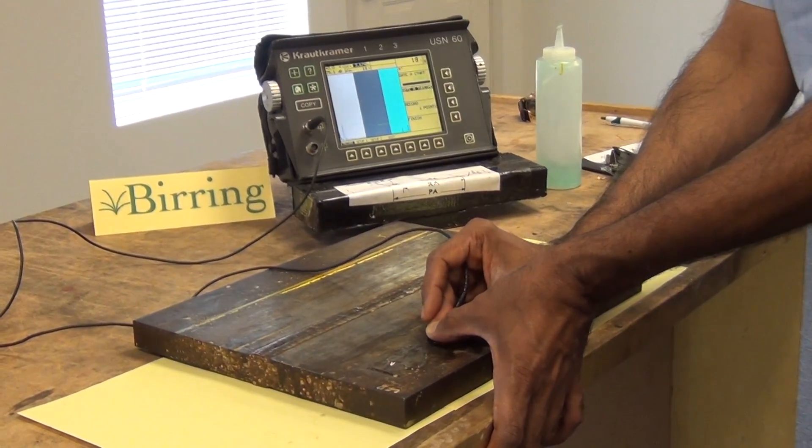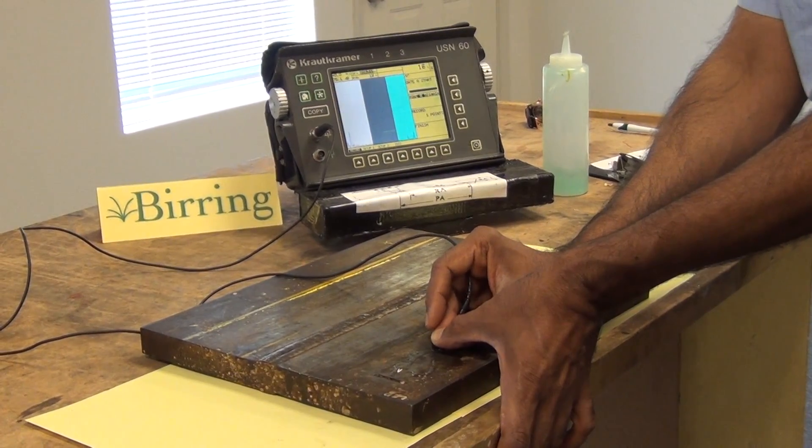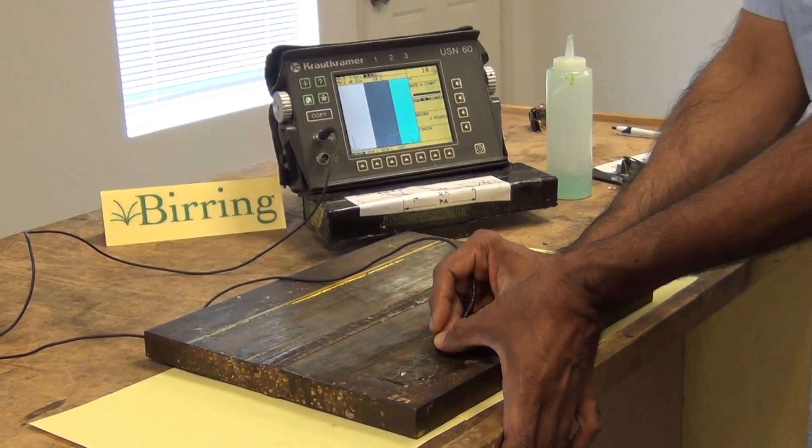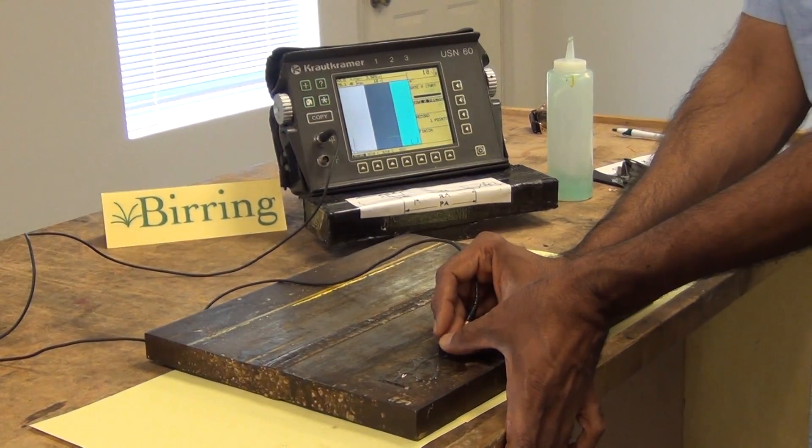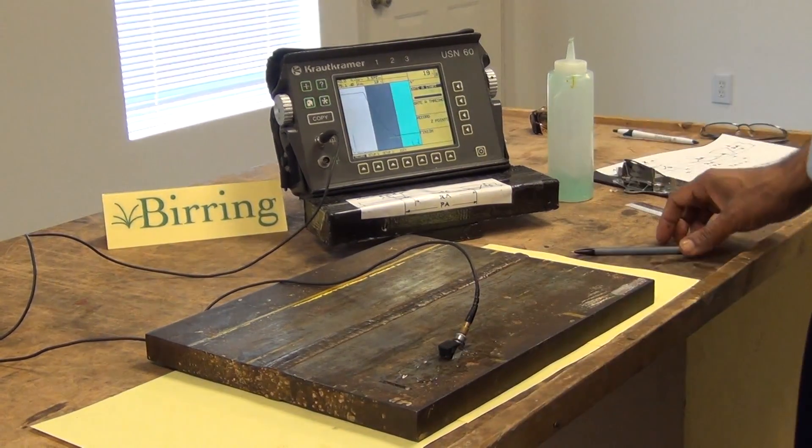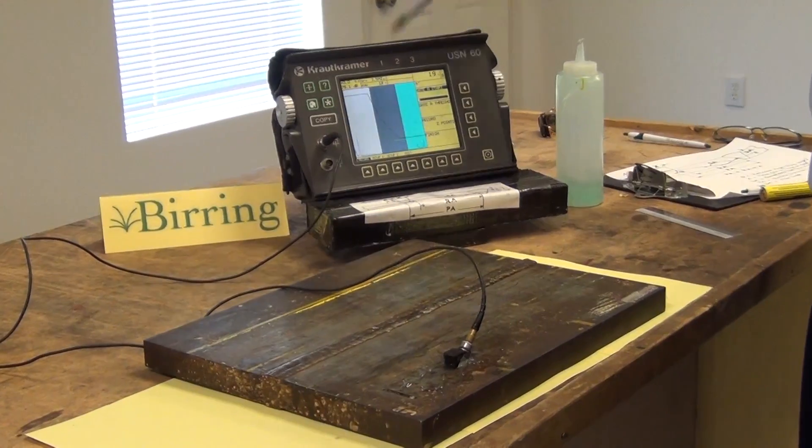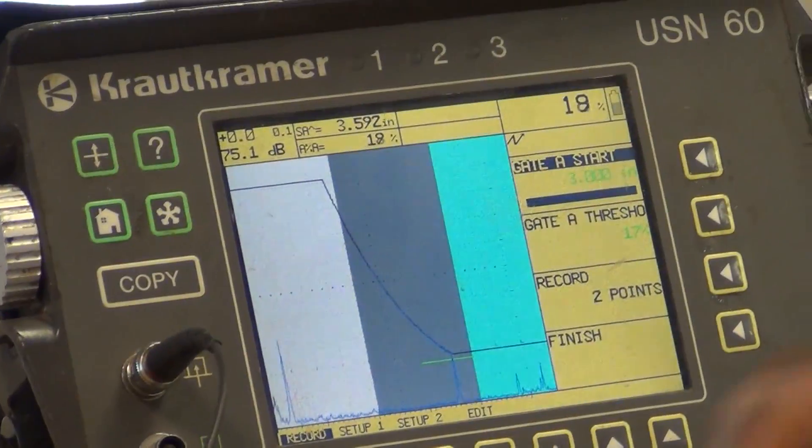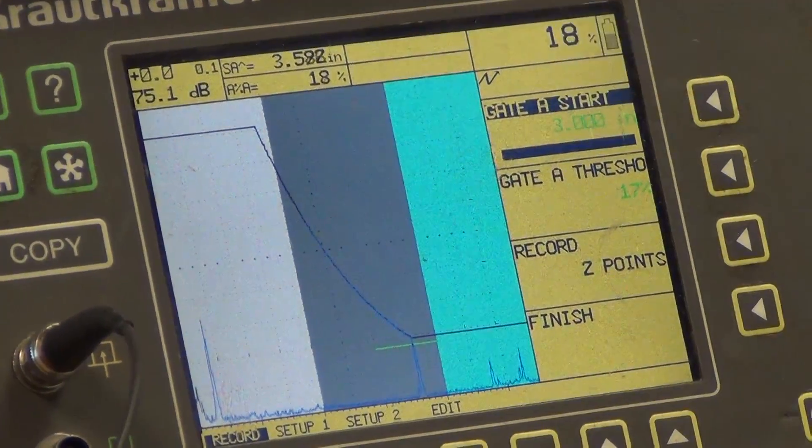Then I move it back and record the notch which is on the top and it's right there and we record it. So we have a two point DAG which goes from right there to right there. So we have established the gain which is 75 dBs.